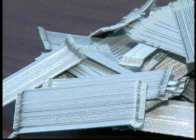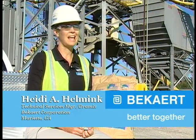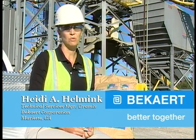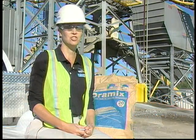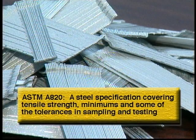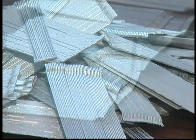What is the ASTM material specification for Dramex steel fibers? The material spec for steel fibers in ASTM is AA20. It's a steel specification and it goes over the tensile strength minimums, some of the tolerances that are required, sampling and testing. It also goes over the types of steel fiber.